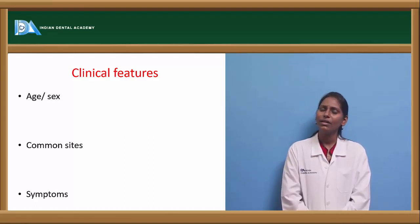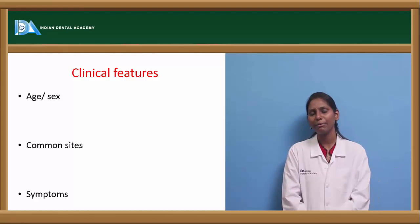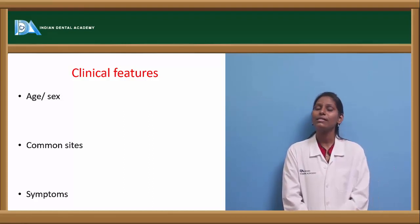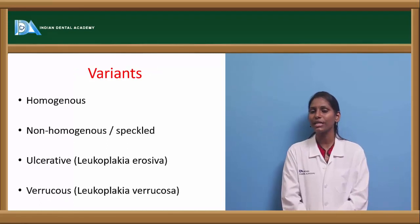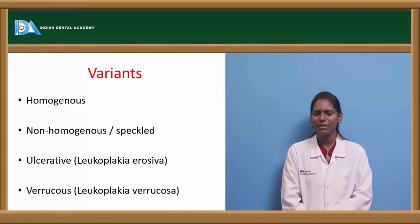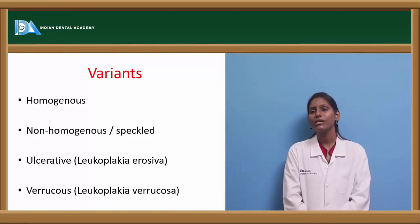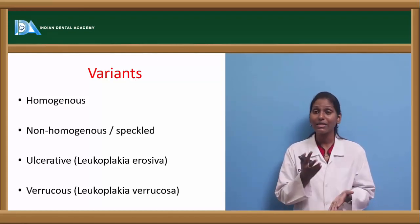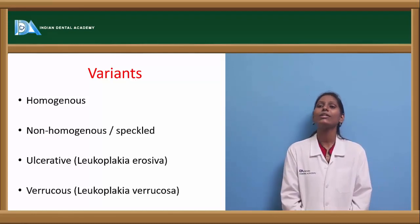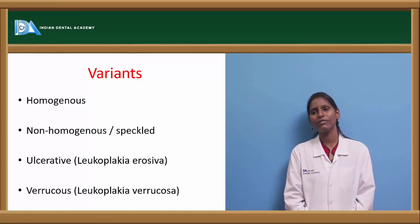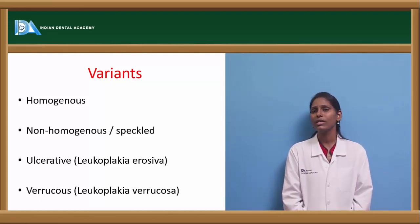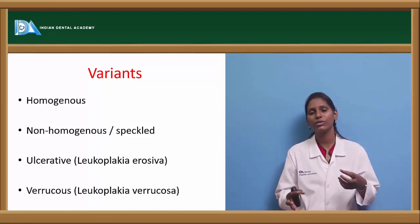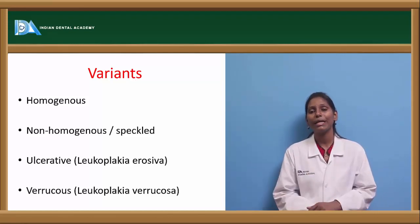Leukoplakias within the oral cavity are usually painless; they don't have any pain. If this leukoplakia is interspersed with an erythematous area, then the patient can give a history of burning sensation. Coming to variants: we have homogeneous leukoplakia — a nice white patch. Non-homogeneous or speckled leukoplakia is seen where we see erythematous areas interspersed within the leukoplakia, that is erythroleukoplakia. An ulcerative variant can also be seen called leukoplakia erosiva. A verrucous variant is also seen — leukoplakia verrucosa — where we can see proliferative verrucous leukoplakia with cauliflower-like growths.